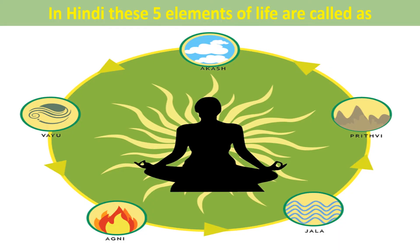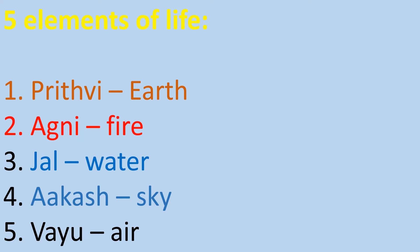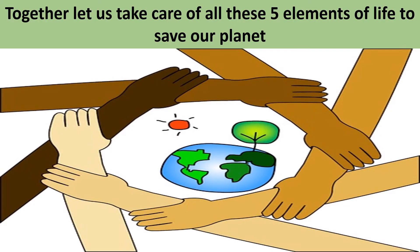In Hindi, these 5 elements of life are called Akash, Prithvi, Jal, Agni, and Vayu. Prithvi in Hindi is called earth in English. Agni in Hindi is fire in English. Jal in Hindi is water in English. Akash is a Hindi word meaning sky in English, and Vayu is a Hindi word meaning air in English. Together, let us take care of all these 5 elements of life to save our planet earth, our mother earth.